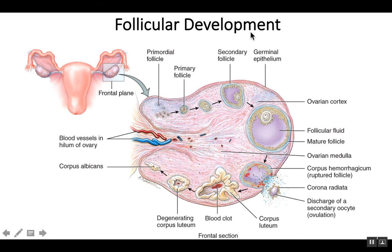One follicle per cycle will eventually become what's known as the Graafian, or mature follicle — the follicle that will ovulate that cycle. That Graafian mature follicle will eventually rupture in response to luteinizing hormone, causing ovulation, or discharge of the secondary oocyte surrounded by many granulosa cells known as the corona radiata.